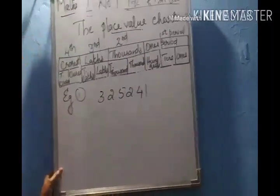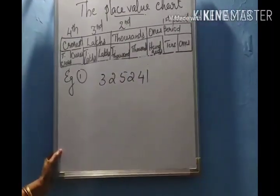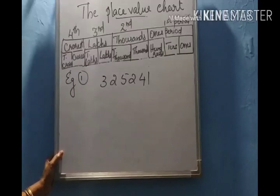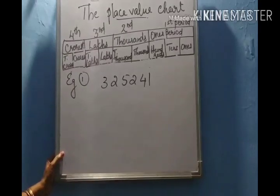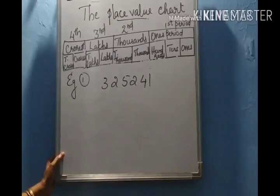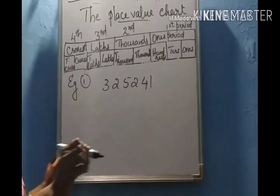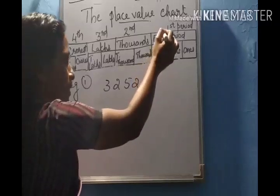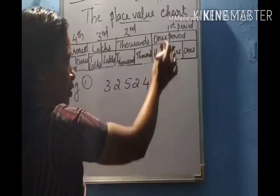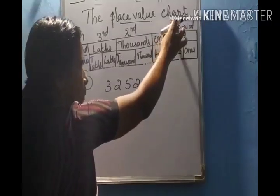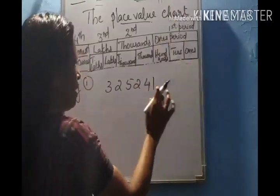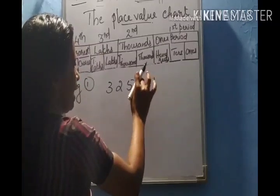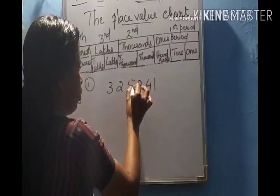This is a six-digit number. Before trying to read the number, first you have to place the comma in the correct place. Placing a comma means the first comma comes after the first period. The first period is the ones period — after three digits: ones, tens, hundreds, then comma.